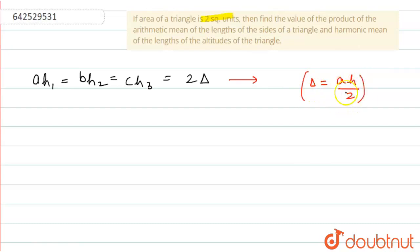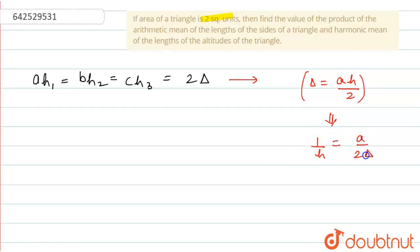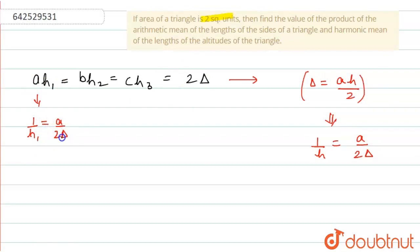Now, from this we can write 1/h = a/2Δ. So from this, we can write a·h1 = 2Δ. Therefore, 1/h1 = a/2Δ.